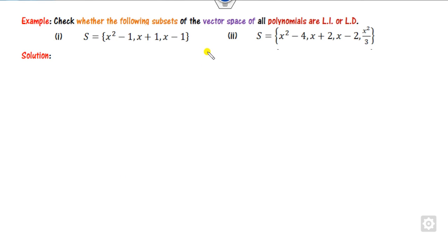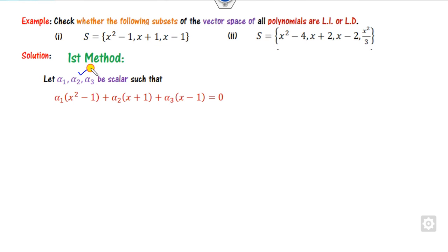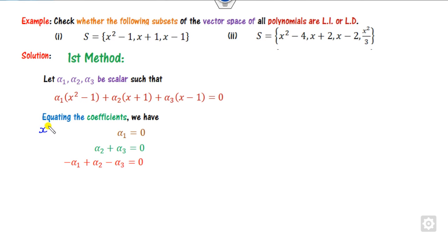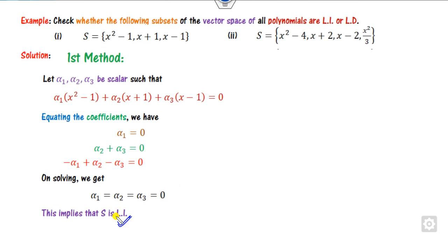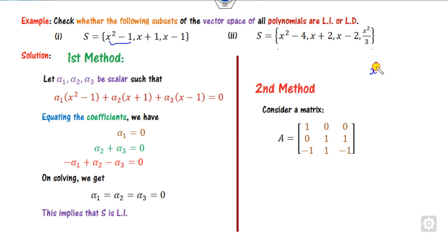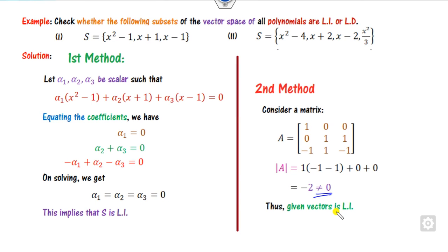Now for a polynomial example: consider v1, v2, v3 as polynomials. Take three scalars alpha_1, alpha_2, alpha_3 and form the linear combination. Equate coefficients of x², x, and the constant term. The coefficient of x² gives alpha_1; substituting gives alpha_2 - alpha_3 = 0 and alpha_2 + alpha_3 = 0. Solving these equations yields alpha_2 = 0, alpha_3 = 0, and alpha_1 = 0. Since all are zero, these polynomials are LI.